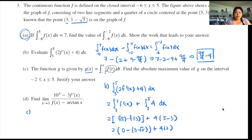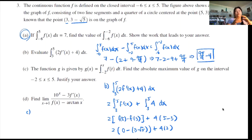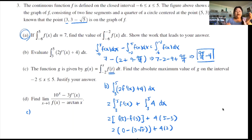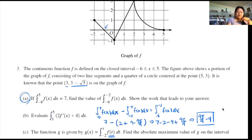Part C: the function g is given by g(x) defined as the integral from negative 2 to x of f(t) dt. We are looking for the maximum of g on the interval negative 2 to 5. Since g(x) is defined as an integral, if we're looking for the maximum, we look for when g prime(x) goes from positive to negative slope. G prime(x) equals f(x), so we look at the graph for where f goes from positive to negative — from above the x-axis to below. That happens right here, so this is a possible maximum at x equals negative 1.